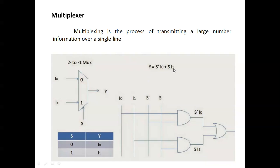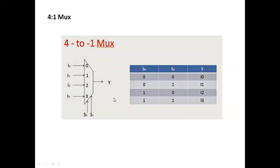The formula for a 2-to-1 multiplexer is Y = S' · I0 + S · I1. If S is zero, the first input I0 comes to the output. If S is one, the second input I1 comes to the output — whatever the value may be, it passes through the multiplexer.